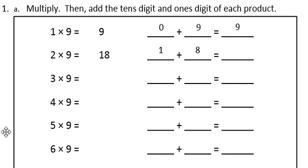The directions say multiply, then add the tens digit and the ones digit of each product. You can see they did the first couple of problems for us.